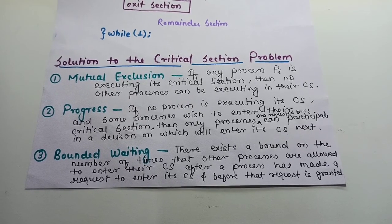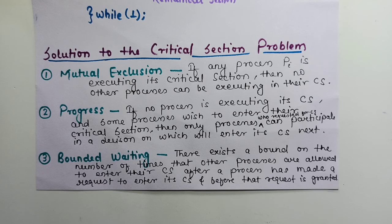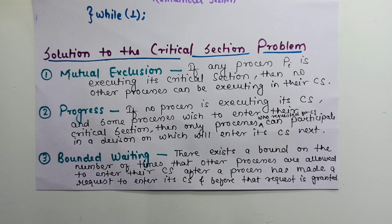Out of these three properties, the first two — mutual exclusion and progress — are mandatory. Bounded waiting is optional, but if we provide mutual exclusion and progress, bounded waiting will typically be satisfied as well. We will be discussing some algorithms, but you can also design your own — just ensure your algorithm satisfies these three properties. So that is the critical section problem. In the next video we will discuss algorithms one by one to make the concept very clear. See you in the next video, thanks for watching.